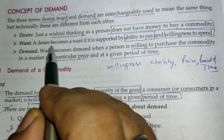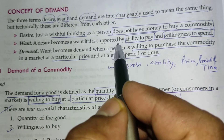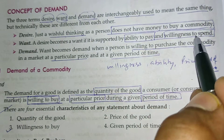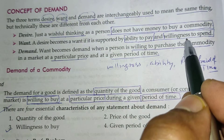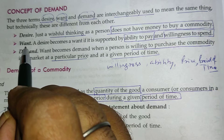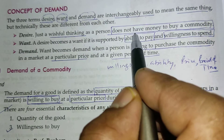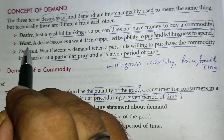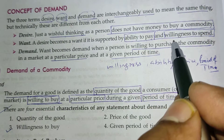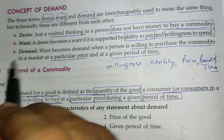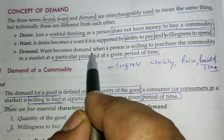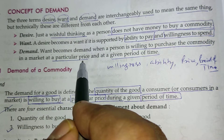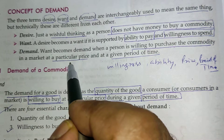Want: a desire becomes a want if it is supported by the ability to pay and the willingness to spend. Demand: a want becomes a demand when a person is willing to purchase the commodity in a market at a particular price and at a given period of time.